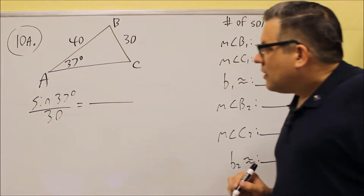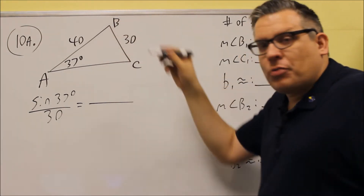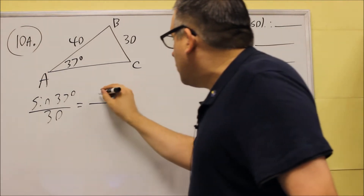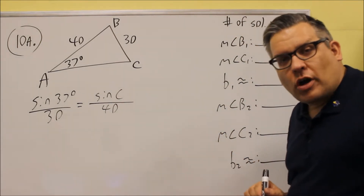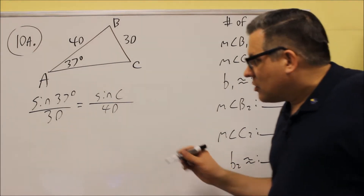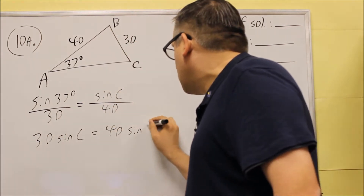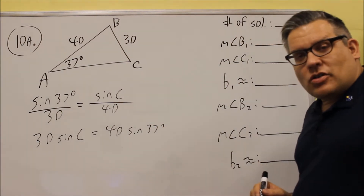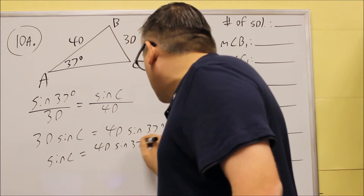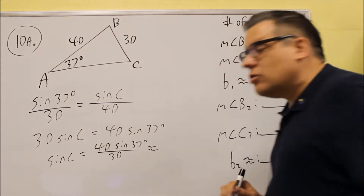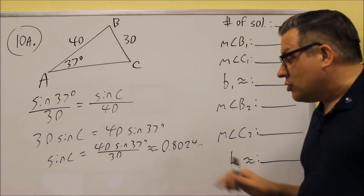The only unknown we have enough information to solve for is angle C, because for side B we'd need at least one piece of information — an angle or opposite side. So we set up: sine(37)/30 = sine(C)/40. Cross-multiplying gives 30·sine(C) = 40·sine(37). Dividing both sides by 30, sine(C) = 40·sine(37)/30, which calculates to approximately 0.8024.